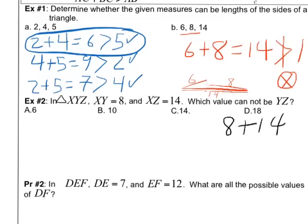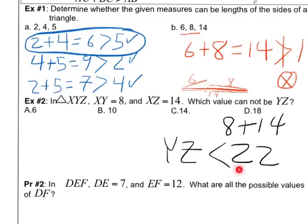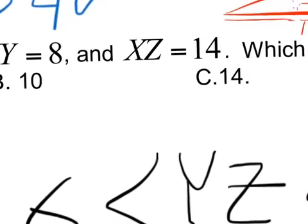We can say, hey, 8 plus 14, well, that's 22. So that's actually the most that side YZ can be. And actually, I'm sorry, it's not the most because it has to be less than 22. It cannot be equal to 22. It has to be less than. And to find the shortest distance it can be, we can do 14 minus 8. And that gives us 6. And so the smallest distance it could be is 6. And this makes sense visually. Here's why.